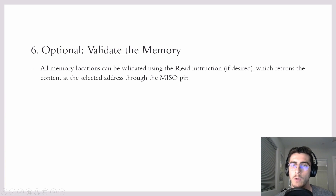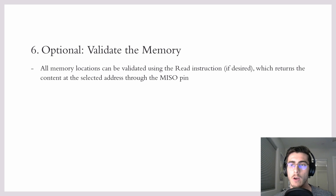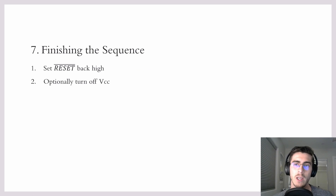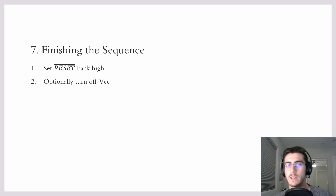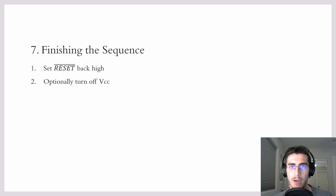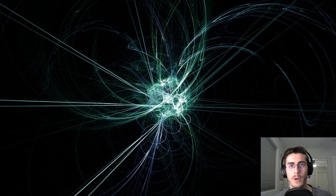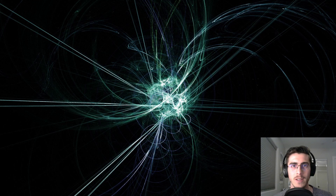One thing we can do to validate that everything worked correctly is read out each word that we flashed to the target device over the MISO pin using the READ instruction. Once we're satisfied with that, we can de-assert reset by allowing it to go back high, and if we feel like it, we can turn off VCC. And that wraps it up — we've now covered the whole ICSP algorithm. As always, if you made it to the end, please drop a like and subscribe, and stay tuned for more on electronics and firmware.